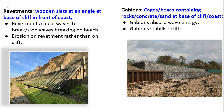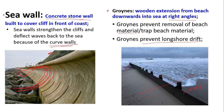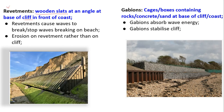Revetment is like a wooden sea wall — not made from concrete but a wooden slat structure at an angle at the base of a cliff, just like sea walls but made of wood. The function of revetment is that it causes waves to break and stops waves from breaking on the beach. The wave cannot hit the cliff but breaks on the revetment instead, so the revetment made of wood is eroded rather than the cliff, protecting the cliff from further erosion.